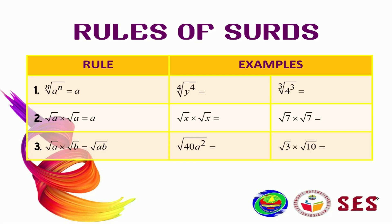Let's look at the first rule. If the power is equal to its root, this should cancel out to be just A. If we recall from the rules of indices, the root has fractional power 1 over n. So we can write this as A to the power of n, to the power of 1 over n. And this will cancel out to be just A.